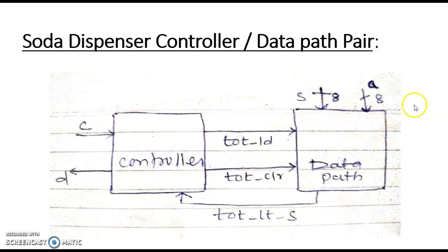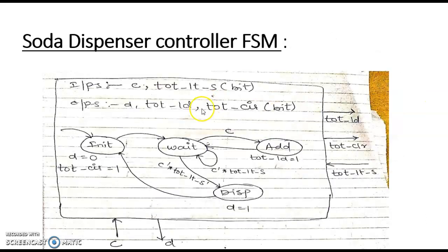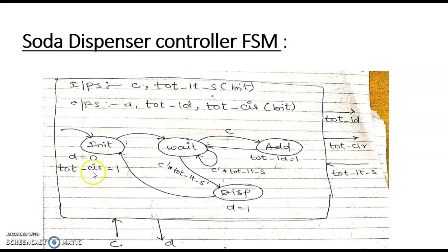Next, we will see that this is a high-level state machine which we are converting into the finite state machine. Here, in the initial state, D is equal to 0 and TOT_clear is equal to 1.